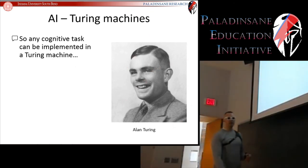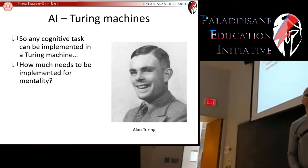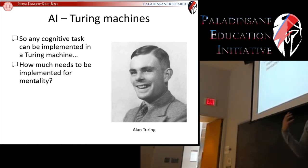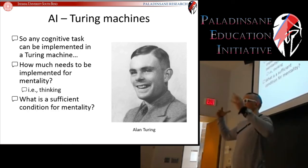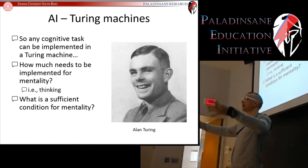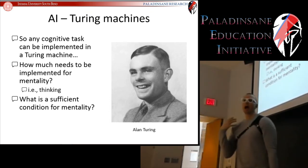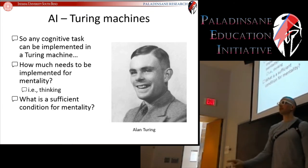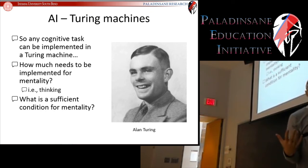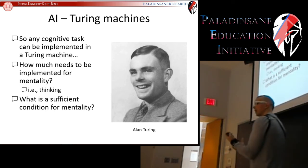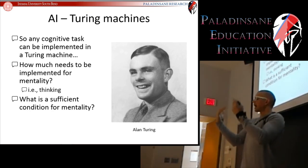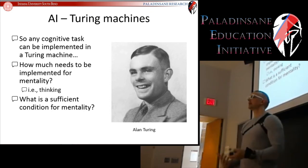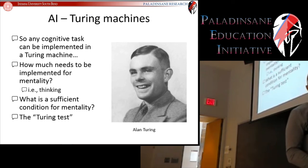If any cognitive task can be implemented by a Turing machine, the last question we're going to address today is: how much cognition do you need for mentality? This idea of having a mind — being able to think — how many cognitive tasks are required before you would look at a machine and say that thing has a mind? That question came up in Turing's time when they were really starting to think about artificial intelligence.